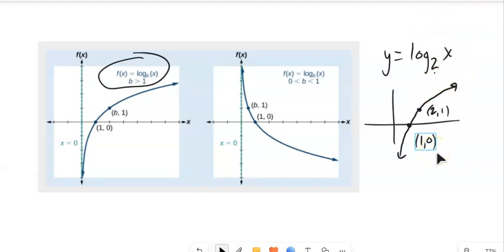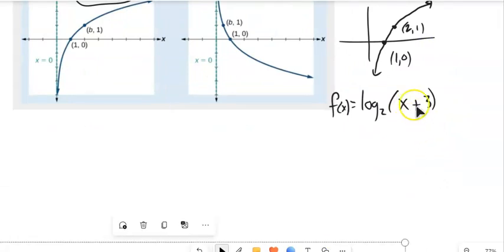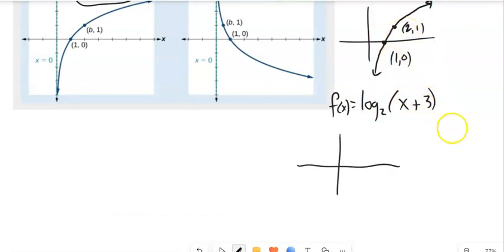If I needed to graph log base 2 of x plus 3, with that x plus 3 inside the function, I know that things that go on inside the function move left, right, and it's counterintuitive. So this x plus 3 will move it left 3. Both these points will get moved left 3. Notice I had an asymptote here at y equals 0, so that gets shifted back to an asymptote at x equals negative 3.